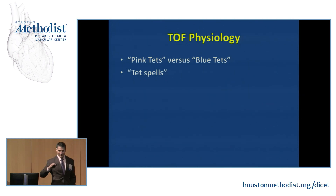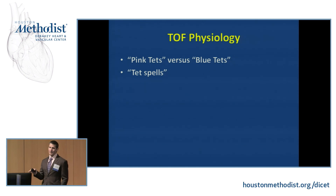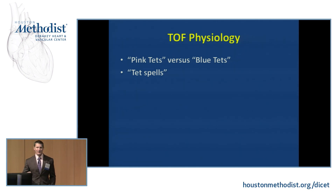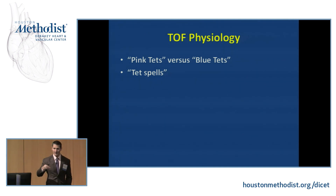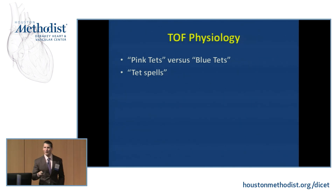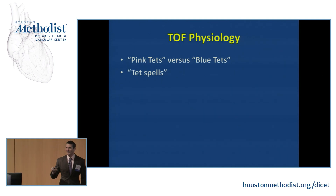Taking a step back — this is the one thing I'll mention that has to do exclusively with unrepaired Tetralogy of Fallot. There's pink tets versus blue tets: pink if you have less anterior deviation of the conotruncal septum and less pulmonary stenosis, blue if you have more. And they have these things called tet spells. It's like HOCM of the RV, but with a VSD.